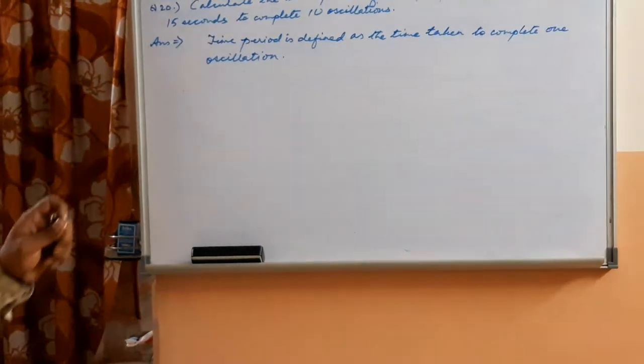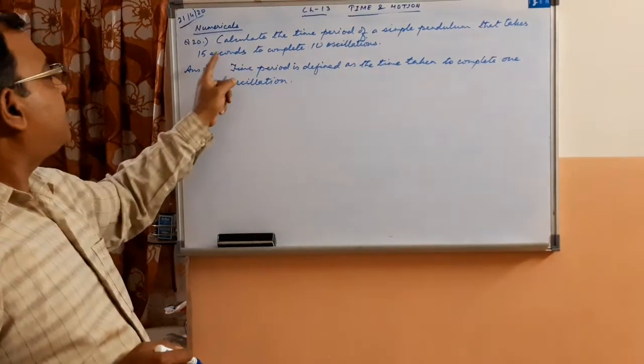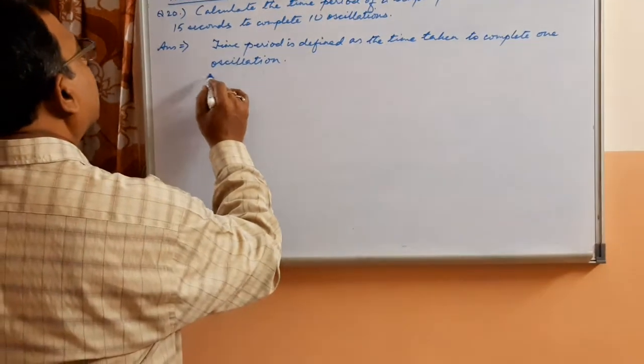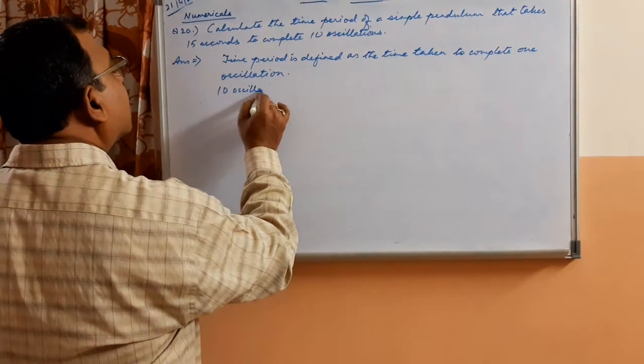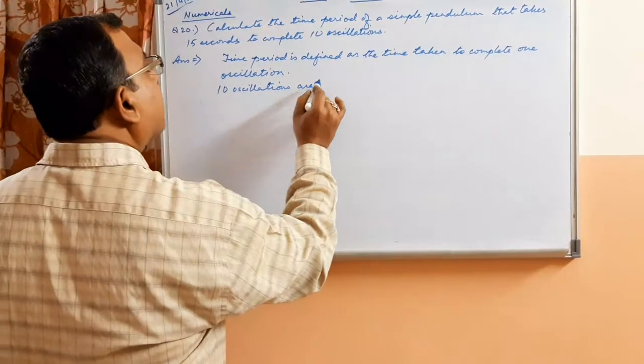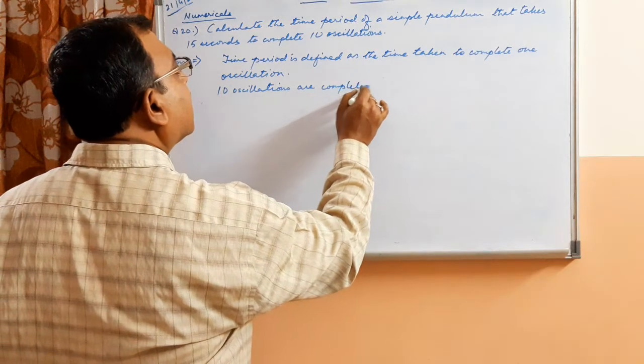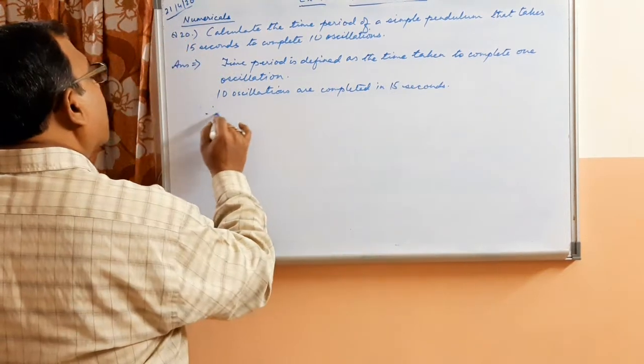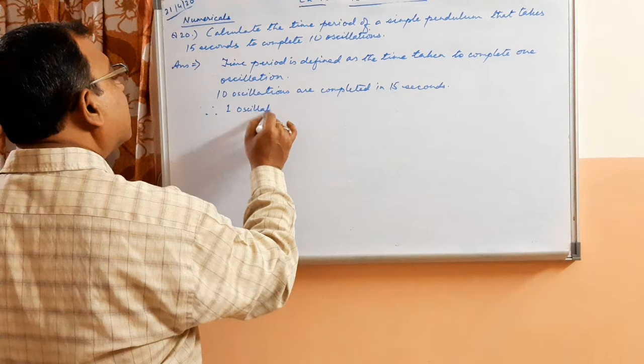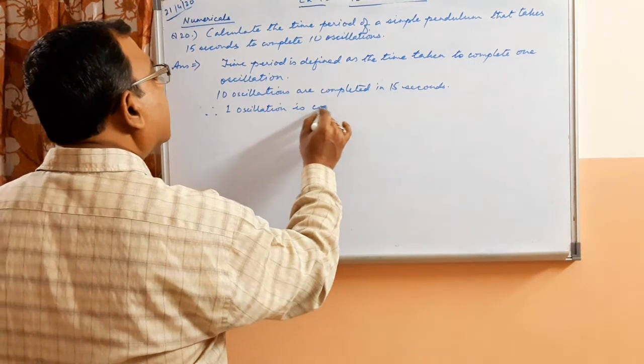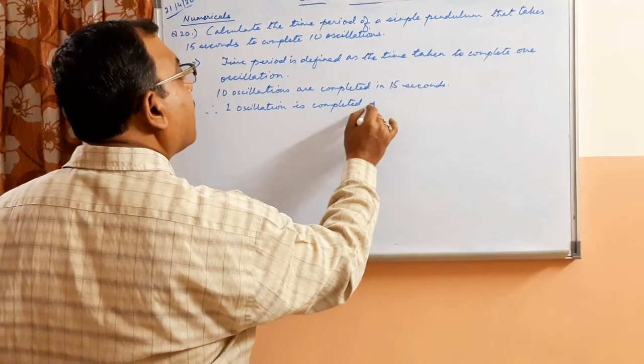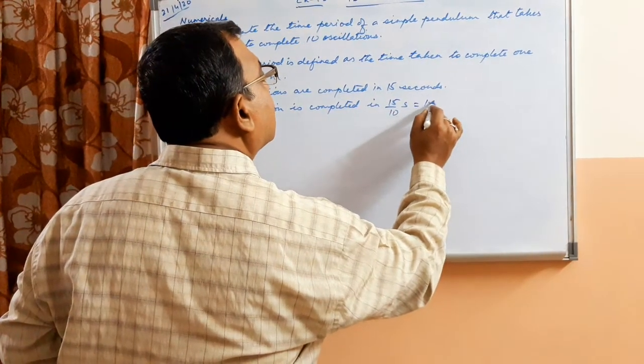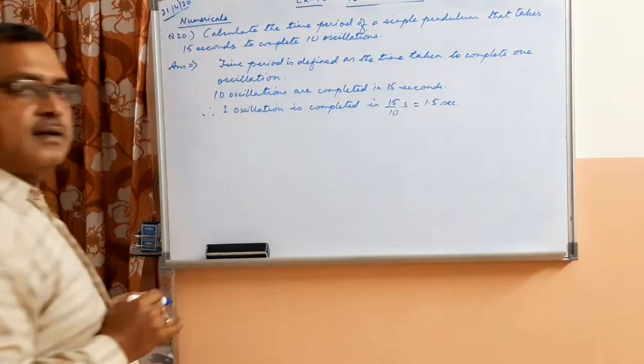Now in the question which is given, to find the time period of a simple pendulum that takes 15 seconds to complete 10 oscillations. So now 10 oscillations are completed in 15 seconds, therefore one oscillation is completed in 15 by 10 seconds, that is equal to 1.5 seconds.